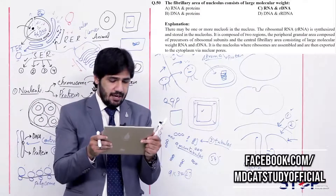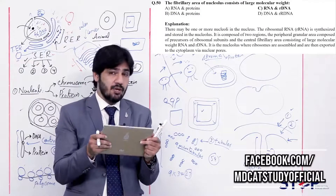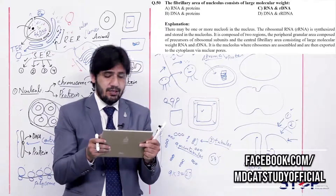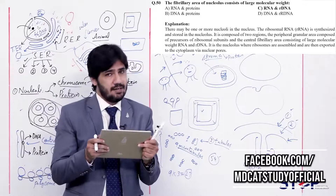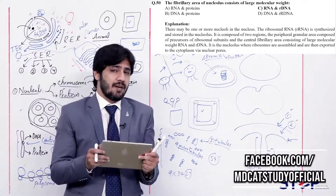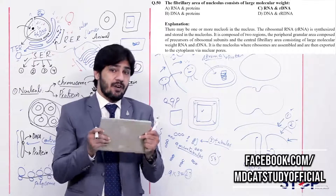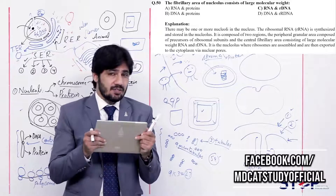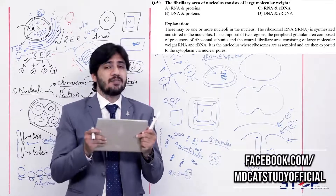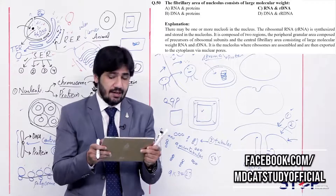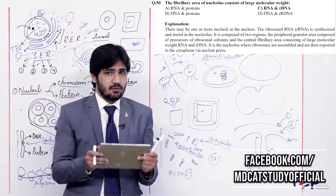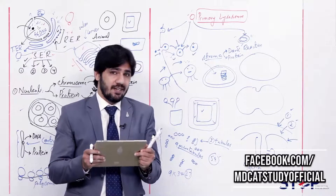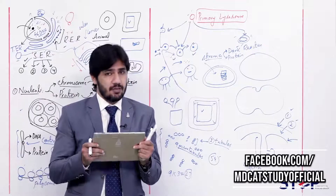Question 50: The fibrillary area of the nucleolus consists of large molecular weight (alpha) rRNA and proteins, (beta) DNA and proteins, (charlie) rDNA, (delta) DNA and rDNA. The nucleolus has two parts — a peripheral part with granules and a central fibrillary part. The central fibrillary part contains RNA and rDNA. So the right answer is charlie — rDNA. With this question, the session ends. I hope all points are now clear for your test. Best of luck for your test. Allah Hafiz.